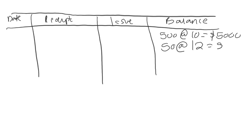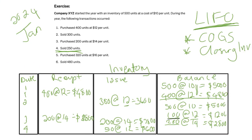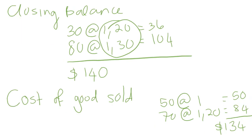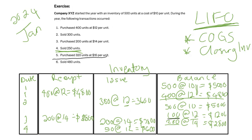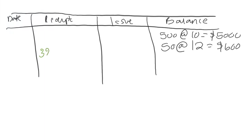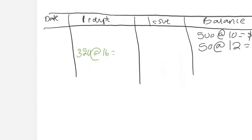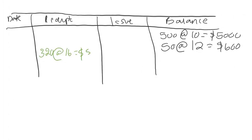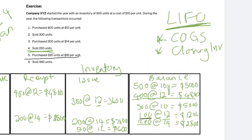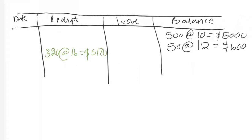On January 5th, we purchased 320 units at $16 per unit. That's 320 × 16 = $5,120. This is recorded under receipts.